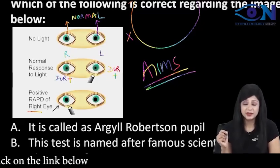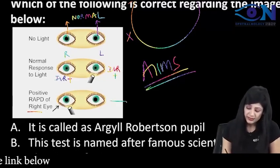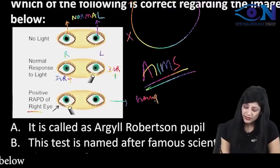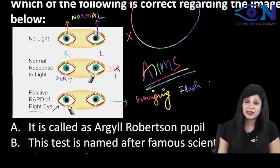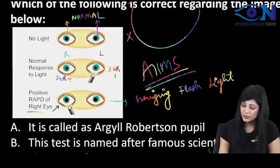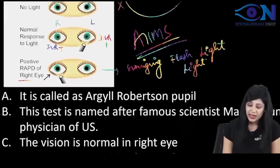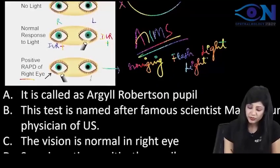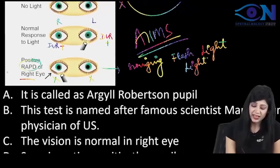Both pupils are constricted but when you are swinging your hand, basically we are doing the swinging flashlight test. We are swinging our hand from one eye to another eye and you can see again there is no reflex here, no reflex here. This is RAPD.